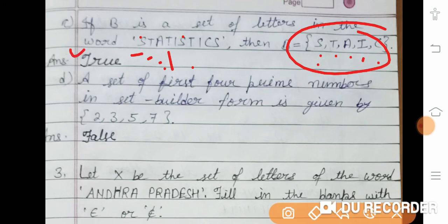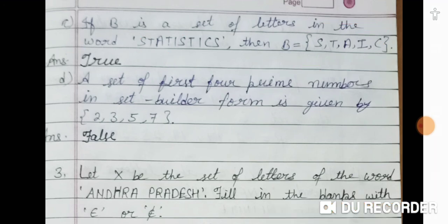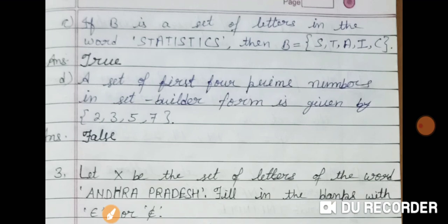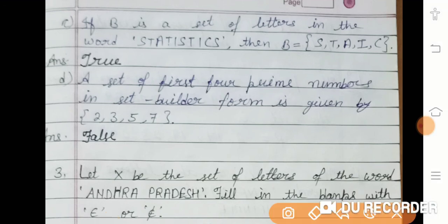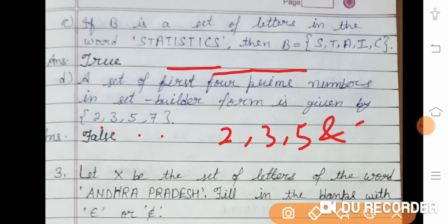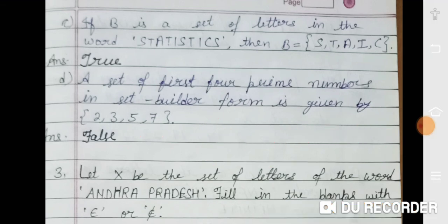D: is the set of first four prime numbers in set builder form given by {2, 3, 5, 7}? Yes — the first four prime numbers are 2, 3, 5, and 7. So this is correct and the statement is true.